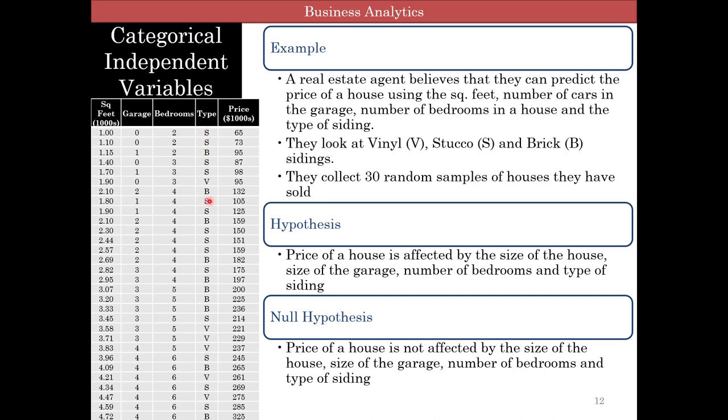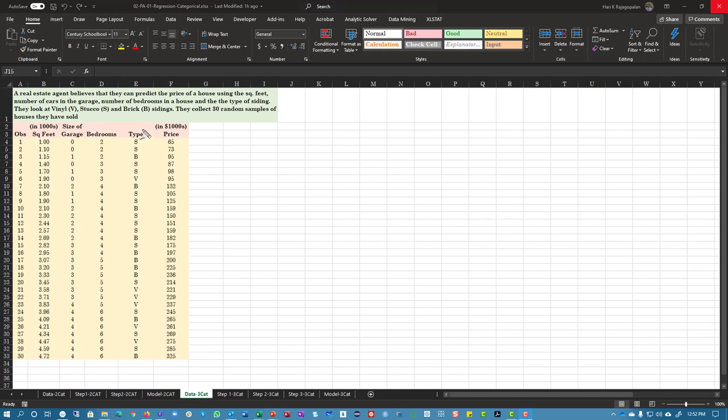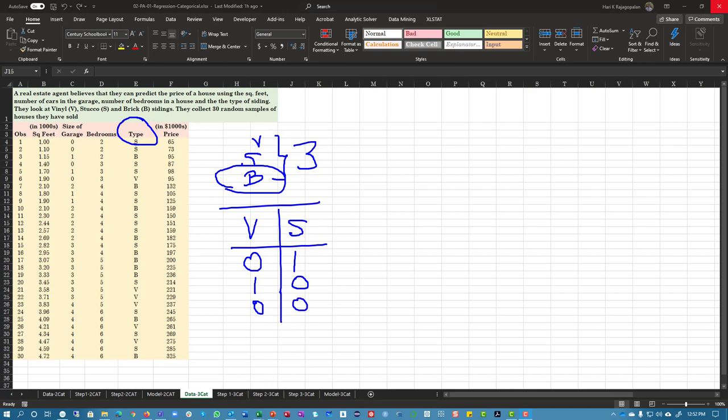So the first thing you're going to do is to convert this. You have three categories. And so remember, it's number of categories minus one. So you're going to have two binary variables. So here we have our data file. And as you can see, the type of siding, you have vinyl, we have stucco, and then we have brick. So that's three categories here. And we really need to figure out a way to convert this into binary variables. And if we assume that the brick is your default, we can then use vinyl and stucco, with 0,1 being stucco, 1,0 being vinyl, and then 0,0 being brick. So that is essentially what we're going to do.